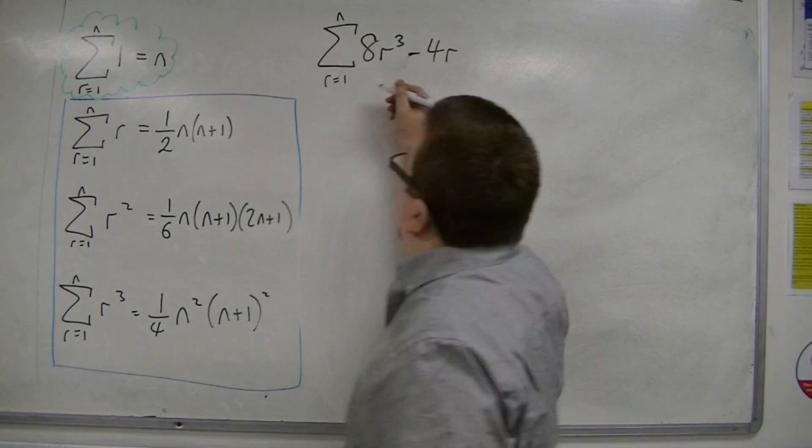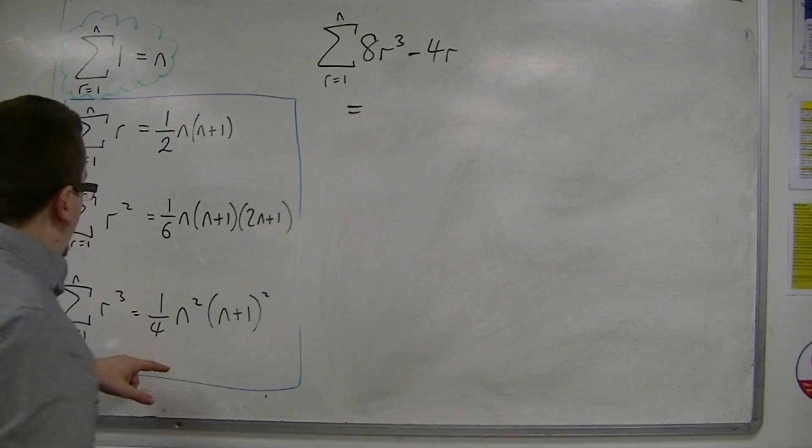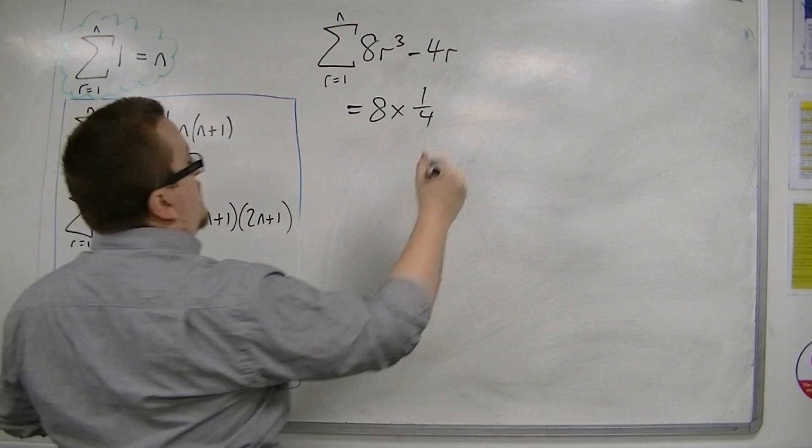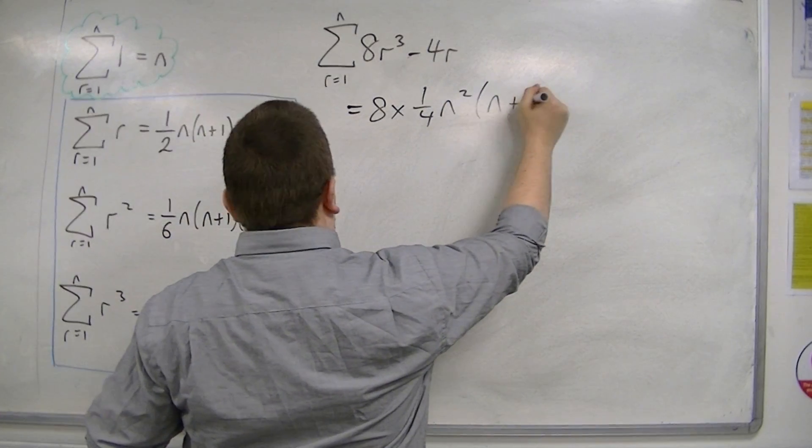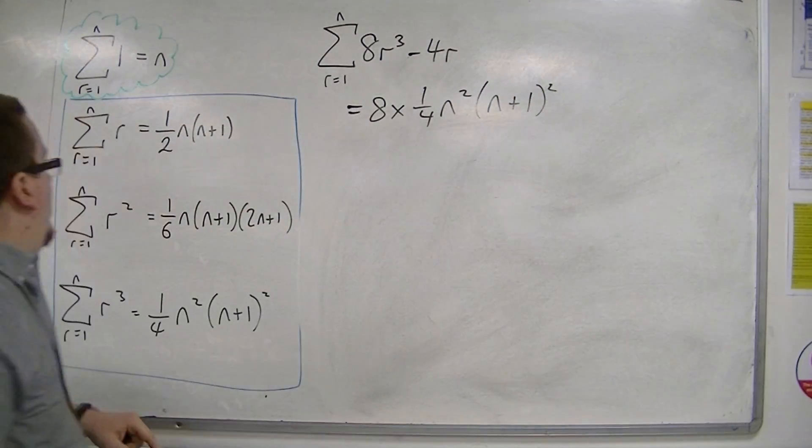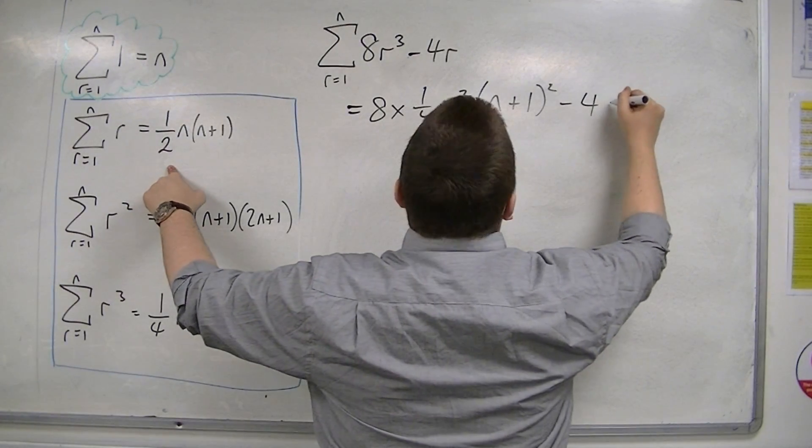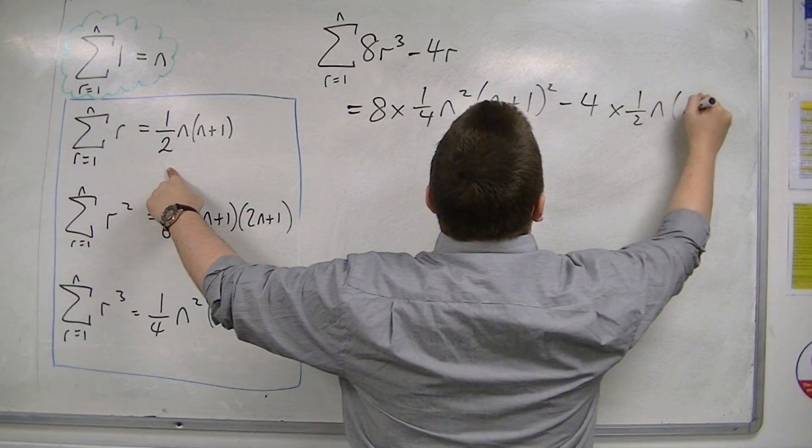So we have 8 lots of r³, so 8 lots of this one: 8 times 1/4 n²(n+1)². And we're taking away 4 lots of r, so take away 4 lots of 1/2 n(n+1).